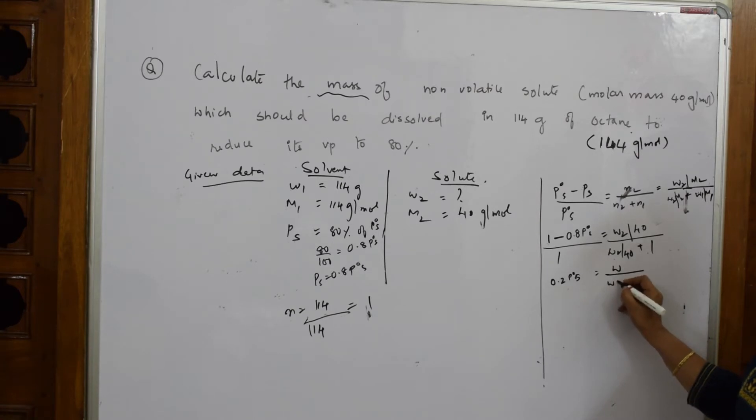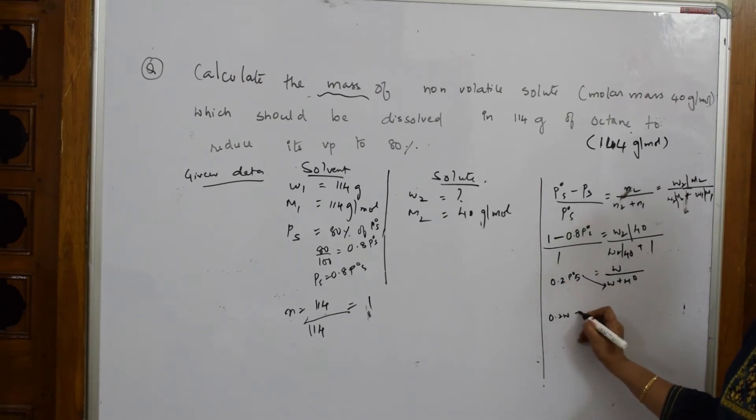This gives 0.2w + 8 = w. Taking w common: w(1 - 0.2) = 8, so 0.8w = 8.